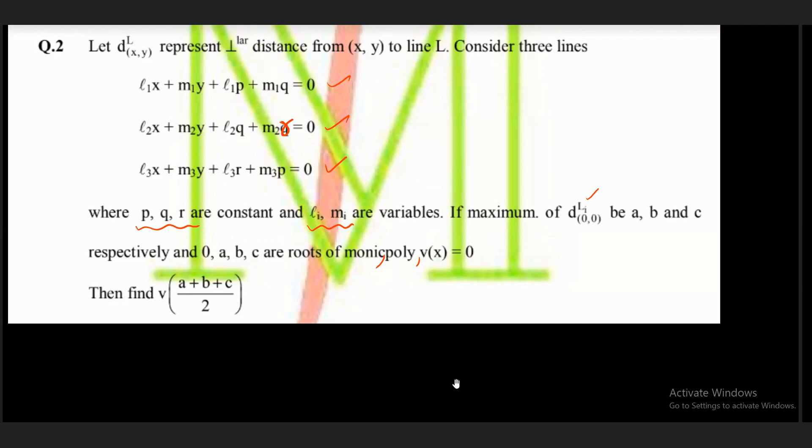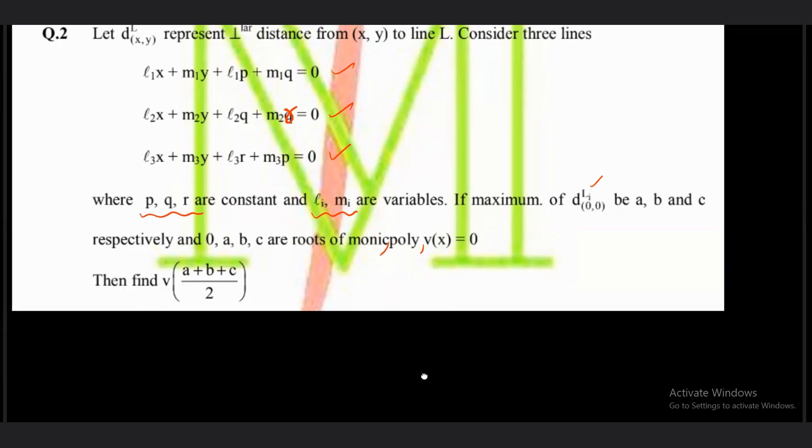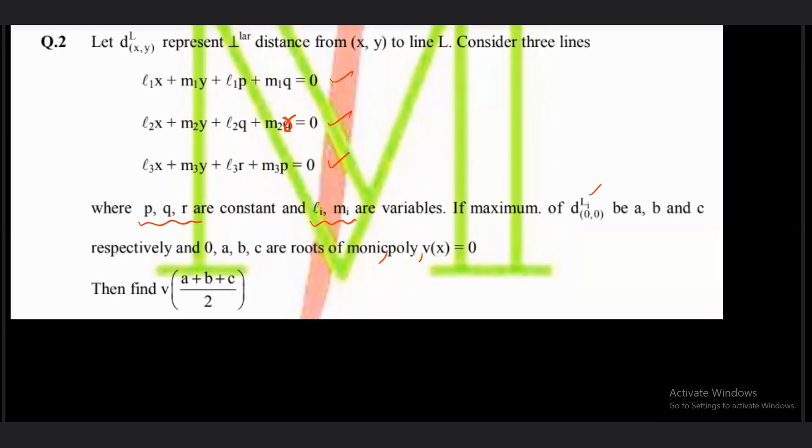So we have to find v(a+b+c)/2. See the beauty of the question. How 3D will be involved in solving this question? What do we have to do here? First of all, we have to take distance of origin from these lines and maximize.